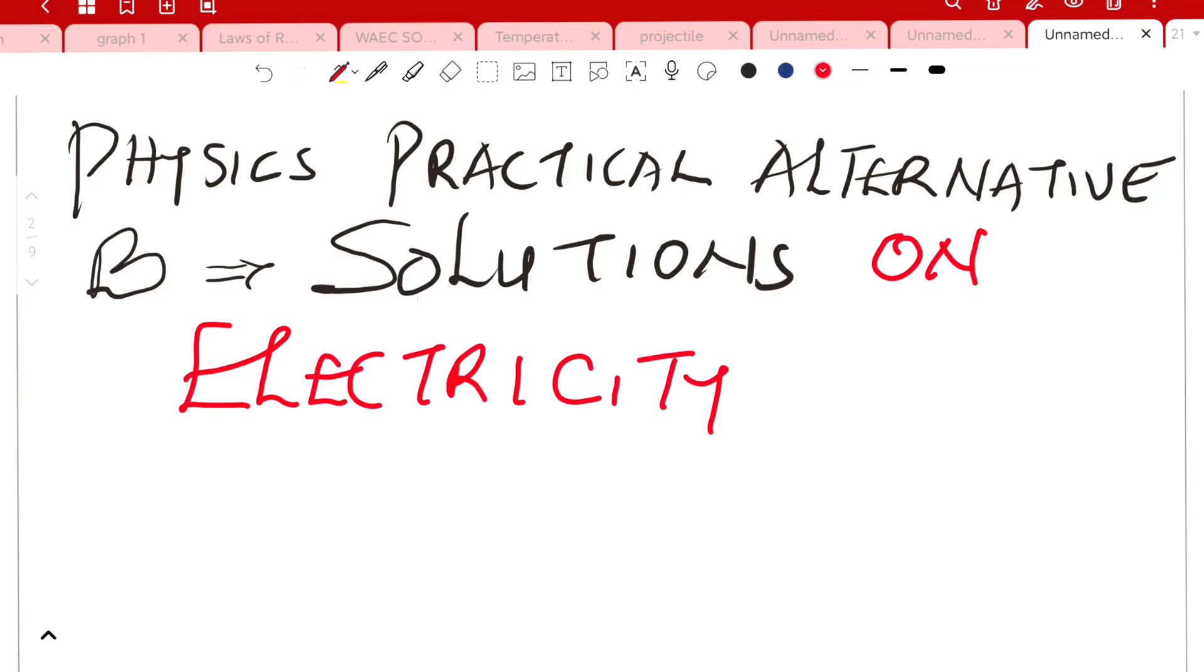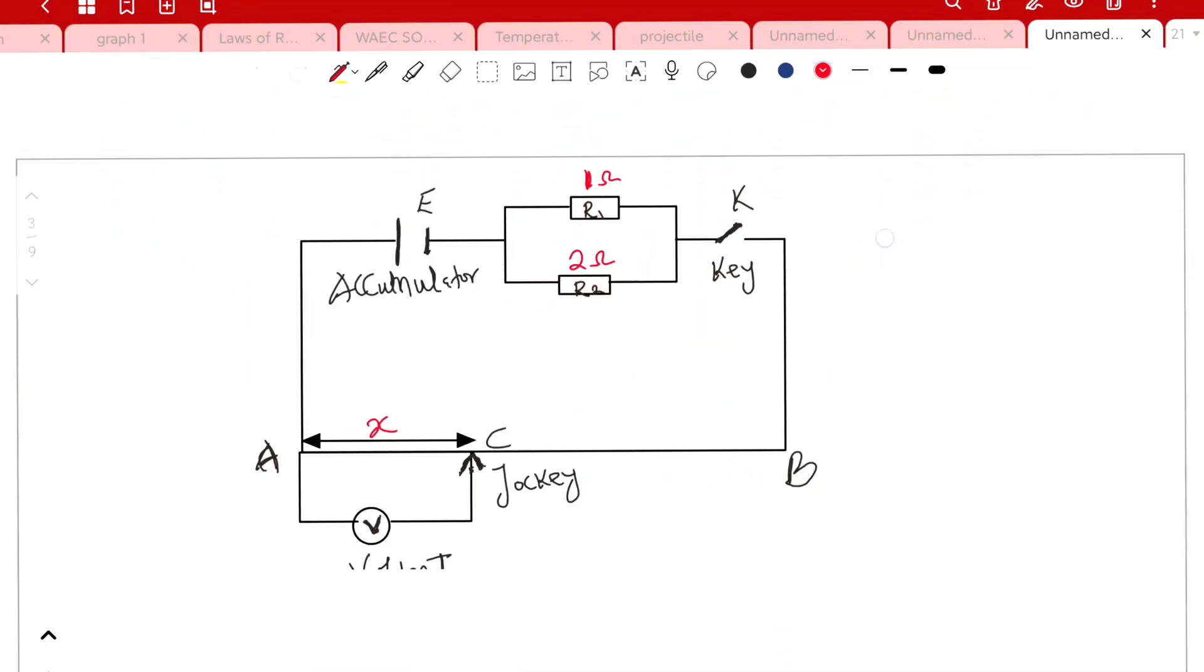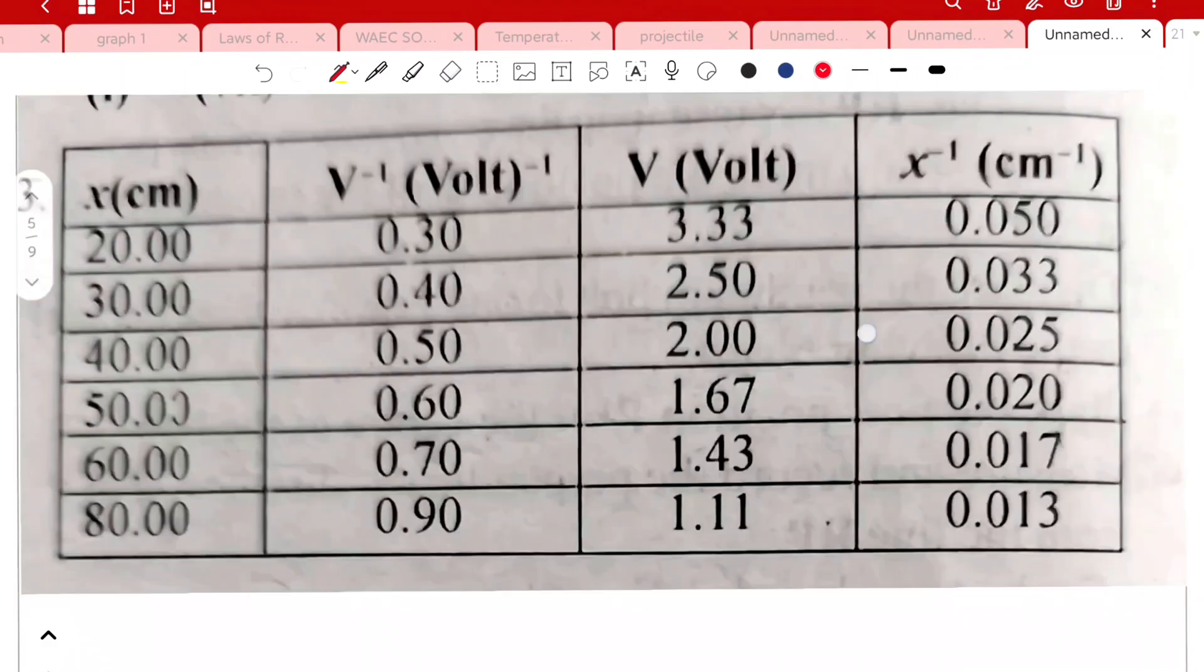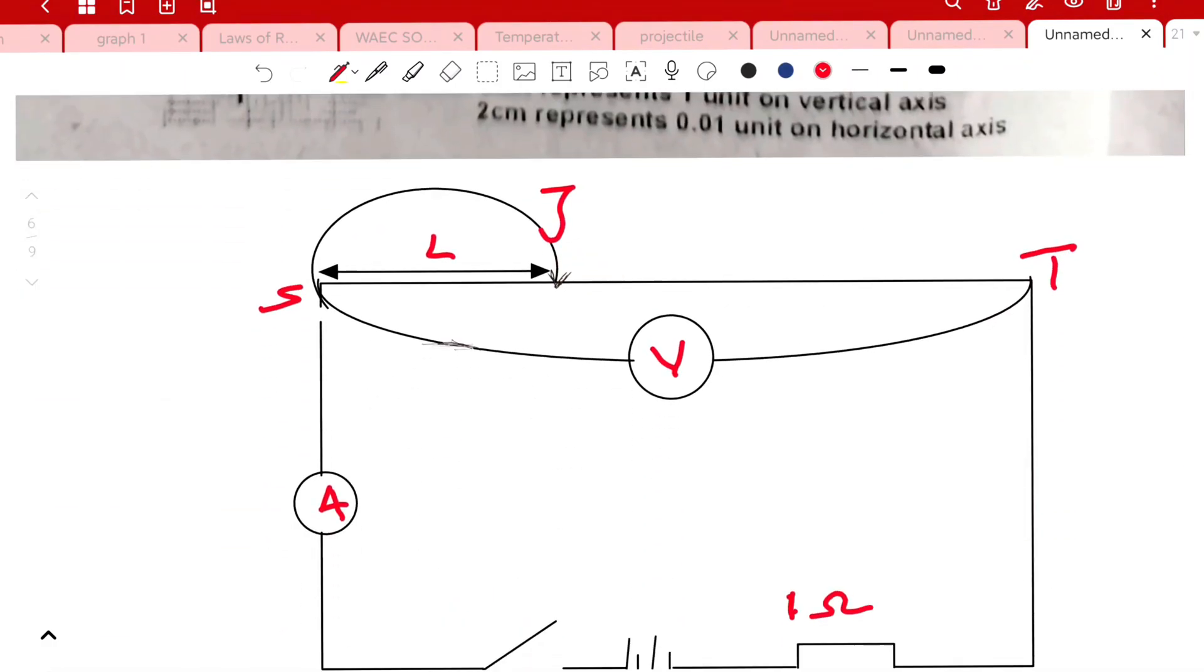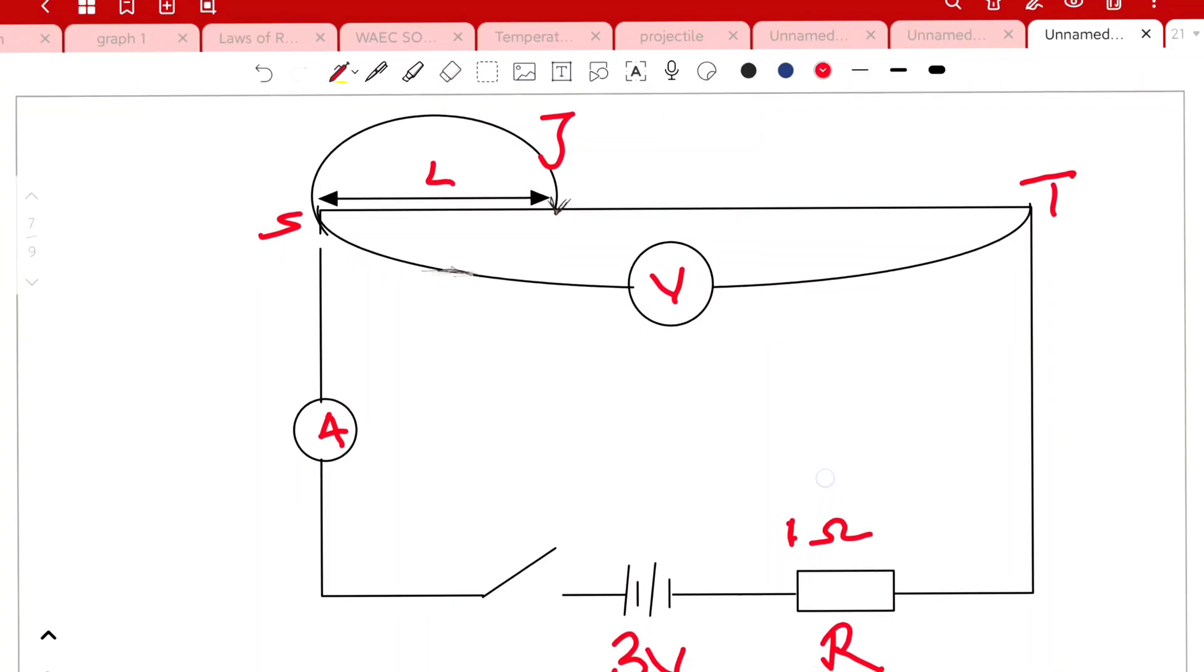I'm here to walk you through the physics practical alternative B solutions on electricity. Based on the alternative A question, you can see that this was the equation, and this was the circuit that they were to exhibit. For alternative B, don't expect the same circuit but expect a similar experiment.